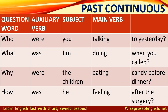In the past continuous, the auxiliary verb is 'was' or 'were,' and the main verb also has the -ing form. For example: Who were you talking to yesterday? What was Jim doing when you called? Why were the children eating candy before dinner? How was he feeling after the surgery?